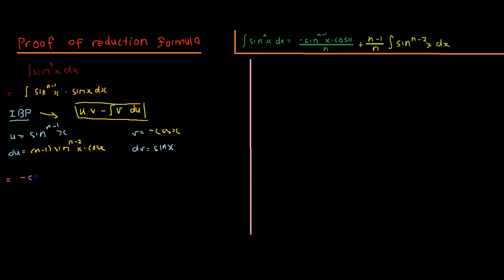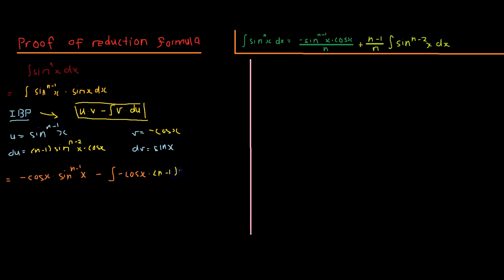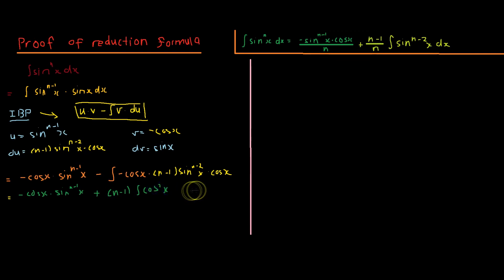Applying the integration by parts formula, we get negative cos x multiplied by sine of x to the power of n minus 1, minus the integral of negative cos x multiplied by n minus 1 multiplied by sine of x to the n minus 2 multiplied by cos x dx. Simplifying further, we take out the n minus 1 and multiply the two cosines together to get cos squared x.